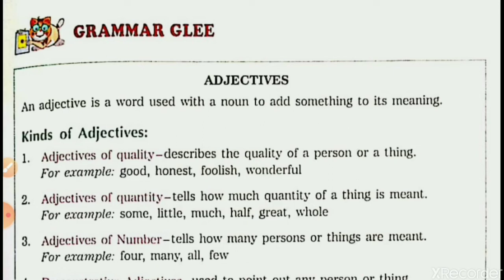So, adjectives are describing words — they describe nouns. They tell us about what kind the noun is, how much, how many, and what color. Adjectives describe nouns or pronouns. An adjective is a word used with a noun to add something to its meaning. They add meaning to the noun. Adjectives tell us what kind of, how many, how much, what color, etc. a person, place, or thing is.